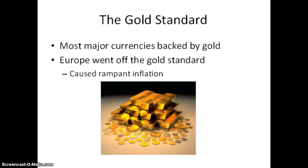Most major currencies were backed by gold, which meant that you could turn a dollar bill in for a dollar's worth of gold. Many European countries took their currencies off the gold standard, which caused rampant inflation. The price of gold began to decline, which meant that American money was now worth less. European money was worth less than it had ever been before, and they were trying to pay off their debts at a lower rate. This resulted in the United States economy beginning to spiral downward as well.